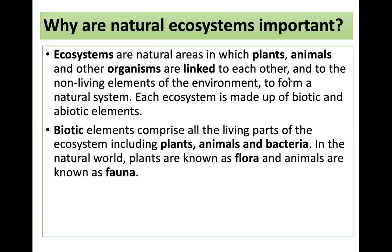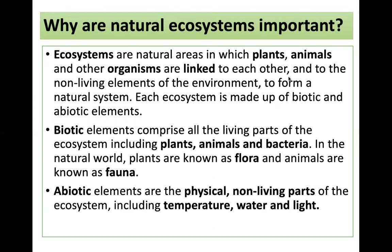Biotic elements comprise all the living parts of the ecosystem, including plants, animals and bacteria. In the natural world, plants are known as flora and animals are known as fauna. Abiotic elements are the physical, non-living parts of the ecosystem. These might include temperature, water and light.